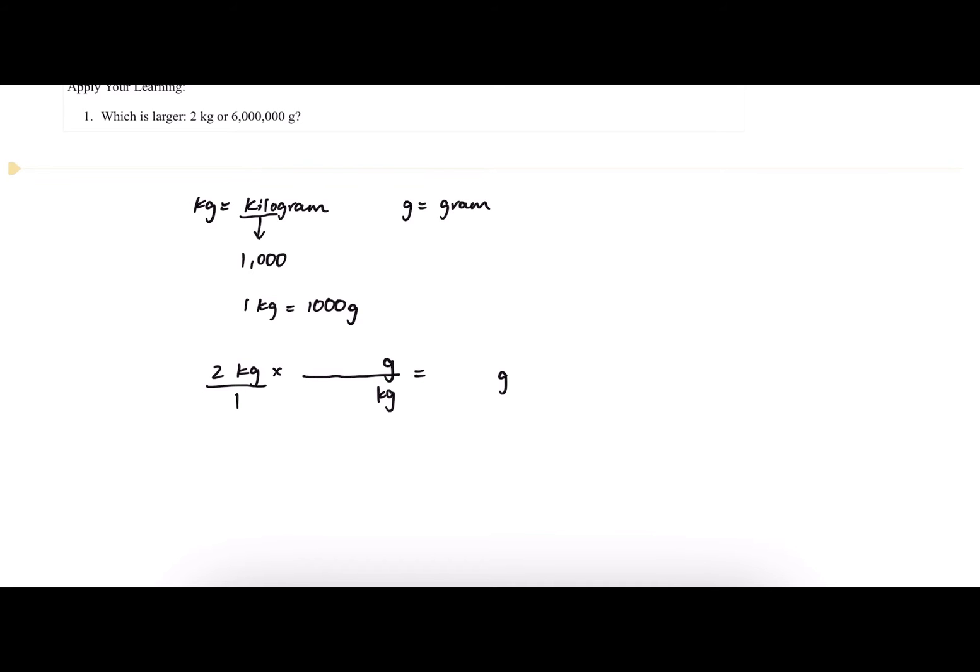Since we're replacing it with grams, that'll go on top of our proportion. We already wrote out our proportion here: one kilogram equals 1,000 grams. Using this ratio, we can convert 2 kilograms into grams. We just fill in the blanks here.